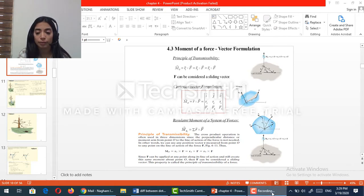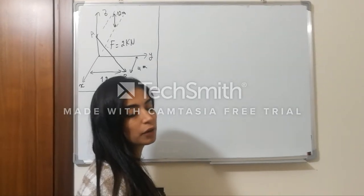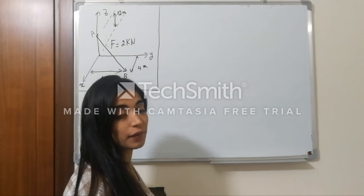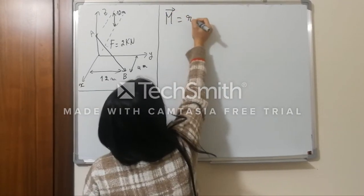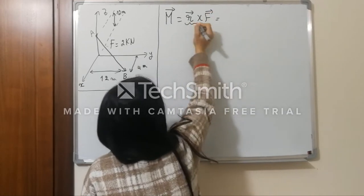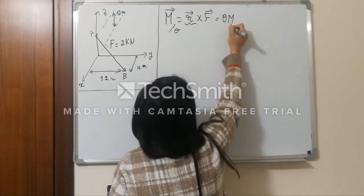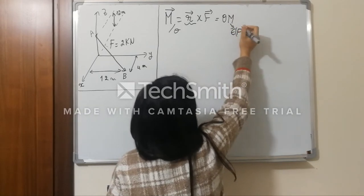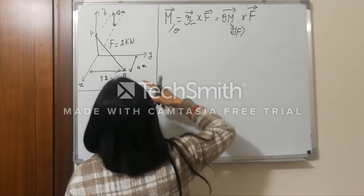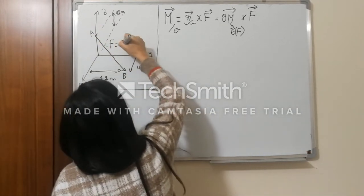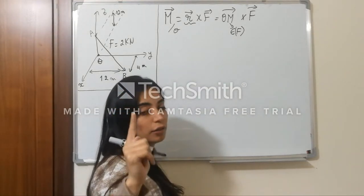Let's start with the first problem. In the 3D case, to find the moment of rotation, I need to apply the cross product, which means M is equal to r cross F. What is r? If I need to find the moment around O, r will be from O to a point M that belongs to the line of action of F. The question here is to find the moment caused by the force F equal to 2 kN around the point O. My objective is to find r and to find the force F.